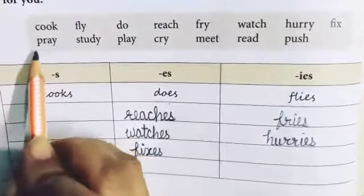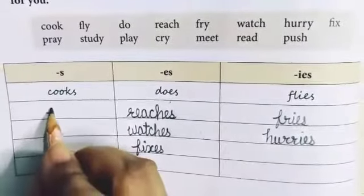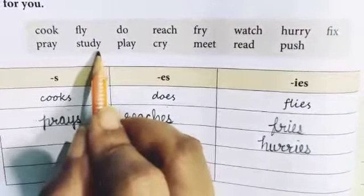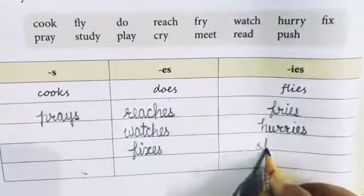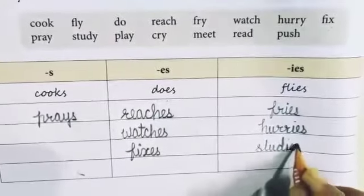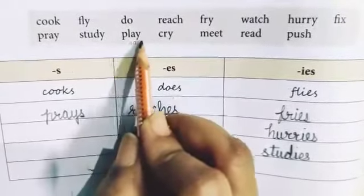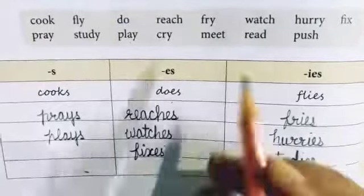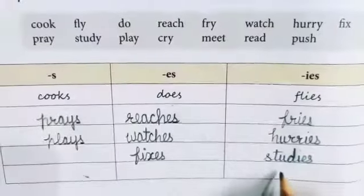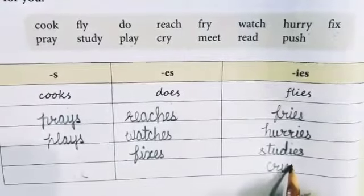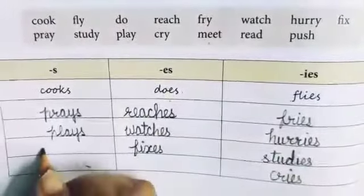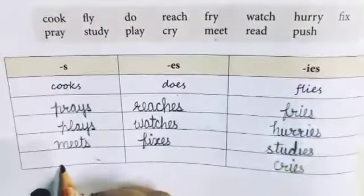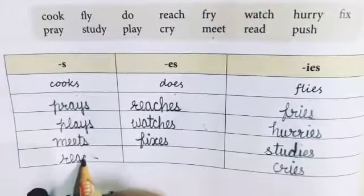Pray — ends with A-Y, no need to remove Y, add only S — P-R-A-Y-S — prays. Study — ends with Y, so remove Y and add IES — studies. Play — ends with A-Y, no need to remove Y, add only S — plays. Cry — ends with Y, so remove Y and add IES — cries. Meet — meets — M-E-E-T-S. Read — reads — R-E-A-D-S.